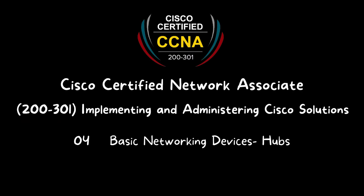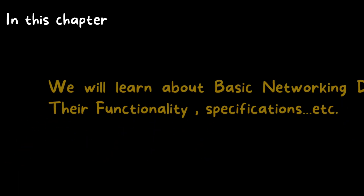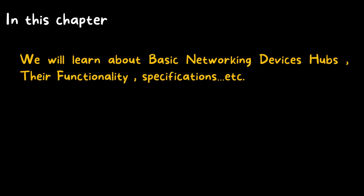Welcome to CCNA 200-301, Implementing and Administering Cisco Solutions. Chapter number four: Basic Networking Devices — Hubs. In this chapter, we will learn about the basic networking device hub, their functionality, specification, etc.